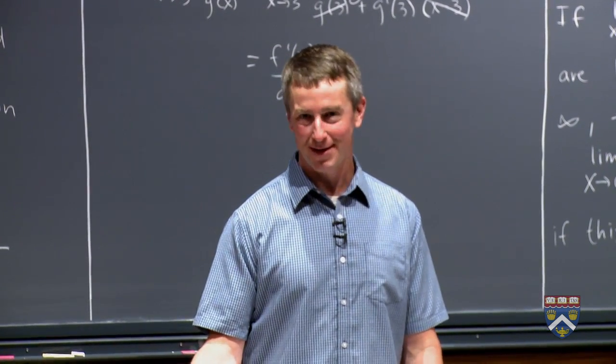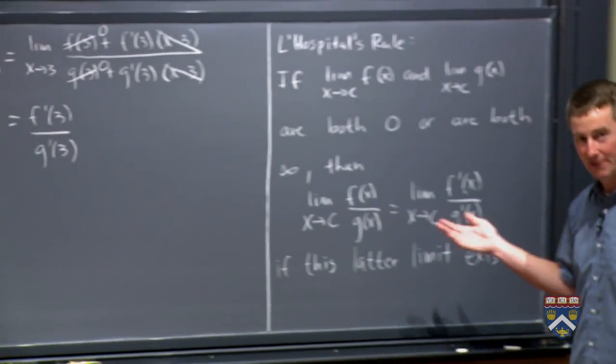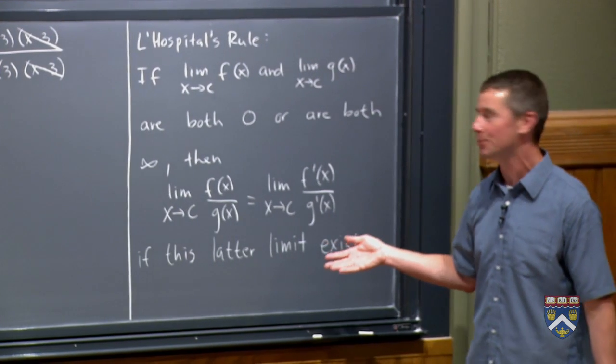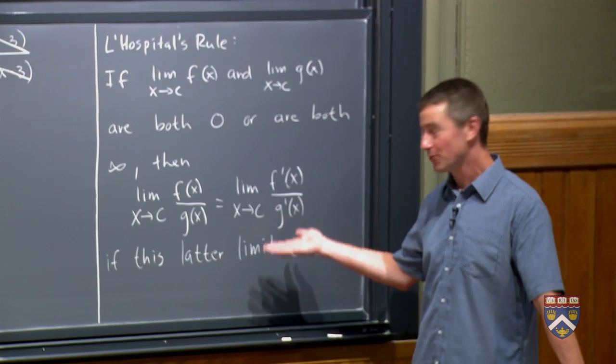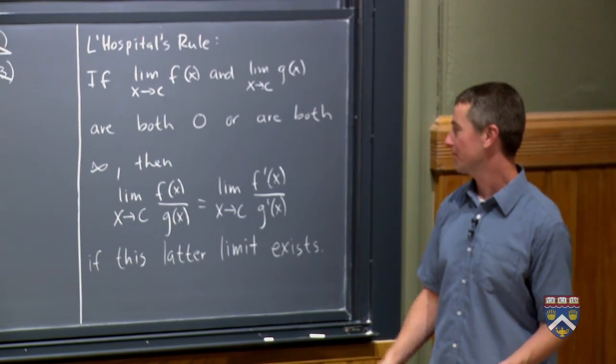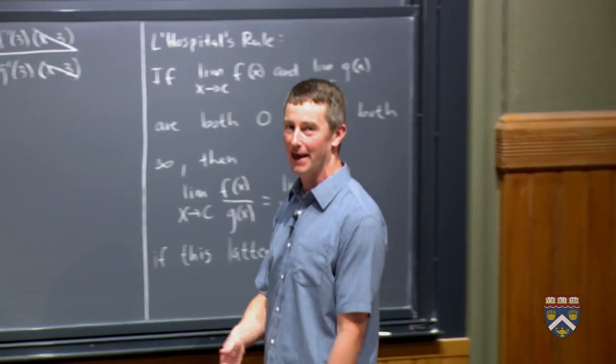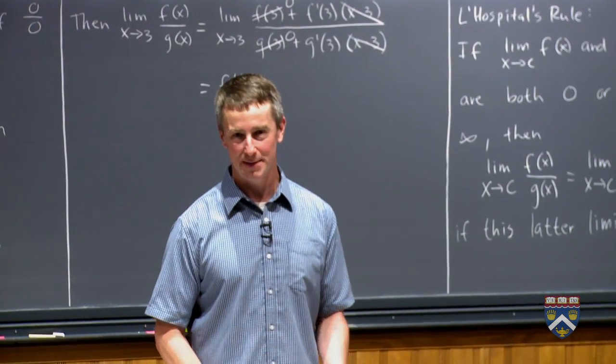In that textbook, L'Hopital published this rule, which had never been seen before. Bernoulli, Johan Bernoulli, came up with this rule as he was teaching L'Hopital calculus, and then L'Hopital published it in the very first calculus book ever, which was published by L'Hopital. And so naturally, people gave L'Hopital the credit for this, and that is why it came to be known as L'Hopital's rule.